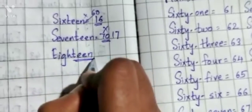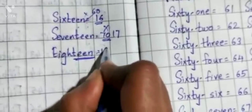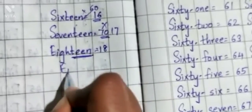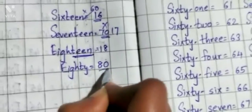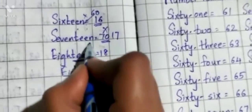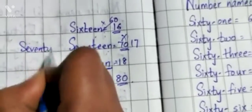They have to sound it properly. If it's teen, then they have to write 18. If it's ty, 80, then they have to write 80. For 70 also, they have to write 70, T-Y. T-Y is main important.